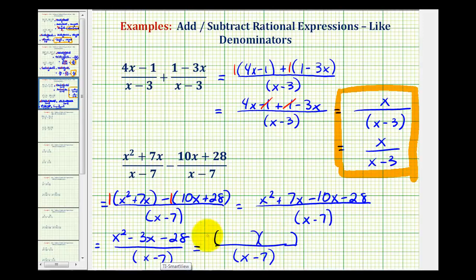The first terms come from the factors of x squared, which are x and x. Now we want the factors of negative 28 that add to negative 3. Well, that would be negative 7 and positive 4. So we'd have x minus 7 here and x plus 4 here.